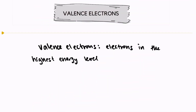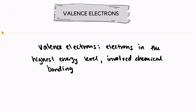Hi, welcome back. In this video, I'm going to explain what valence electrons are. Valence electrons are electrons that are in the highest energy level, and they're the electrons that are involved in chemical bonding. So they really affect the nature of an element. The number of valence electrons can give us clues about how elements will interact with each other, and whether or not they will form a chemical bond, and even what type of chemical bond they will form.